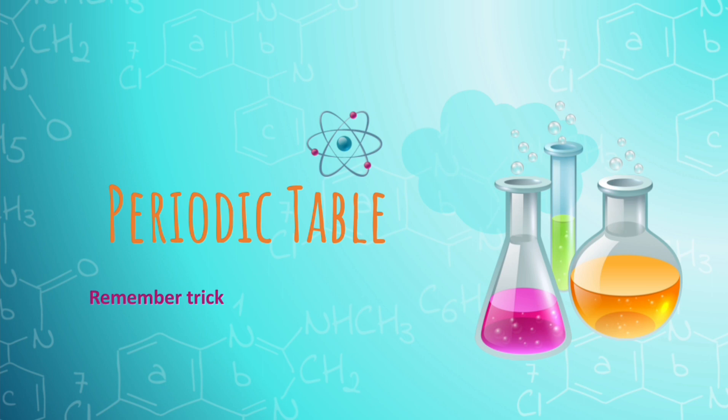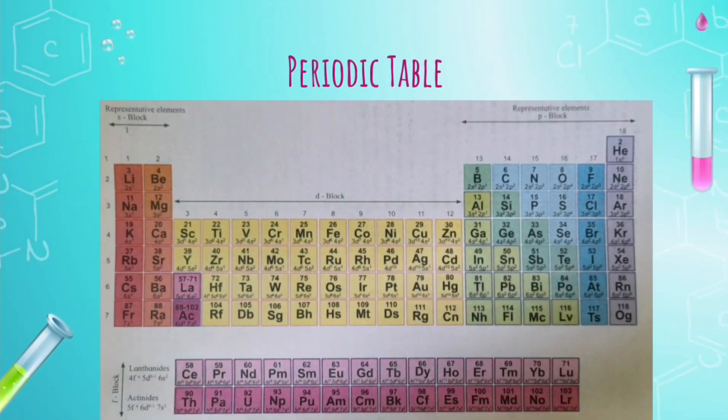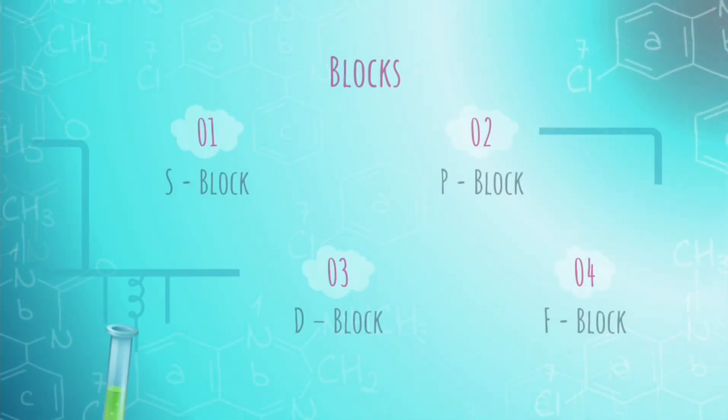Periodic table is divided into four blocks which are S block, P block, D block and F block. The rows of table are called periods and the columns are called groups. And the elements from same column or group of the periodic table show similar chemical properties.